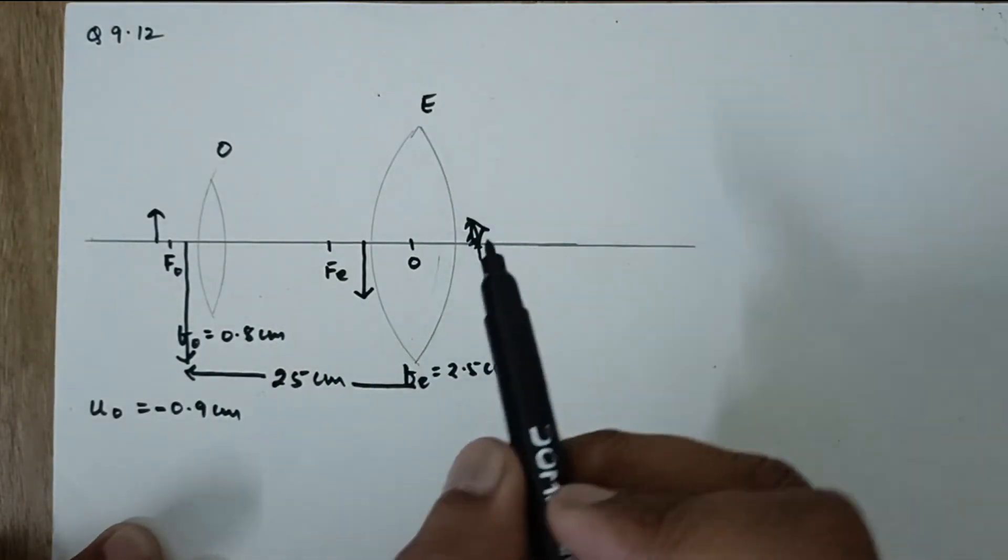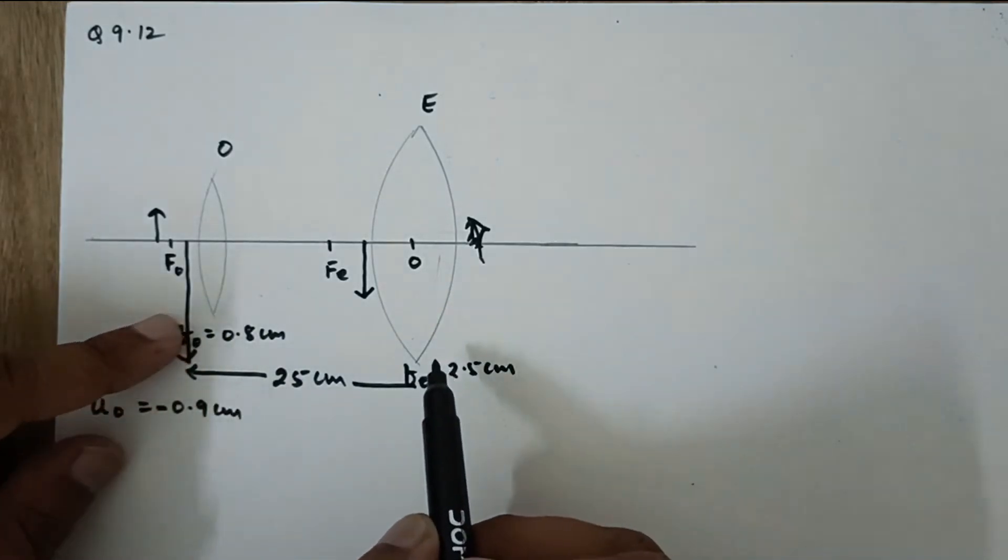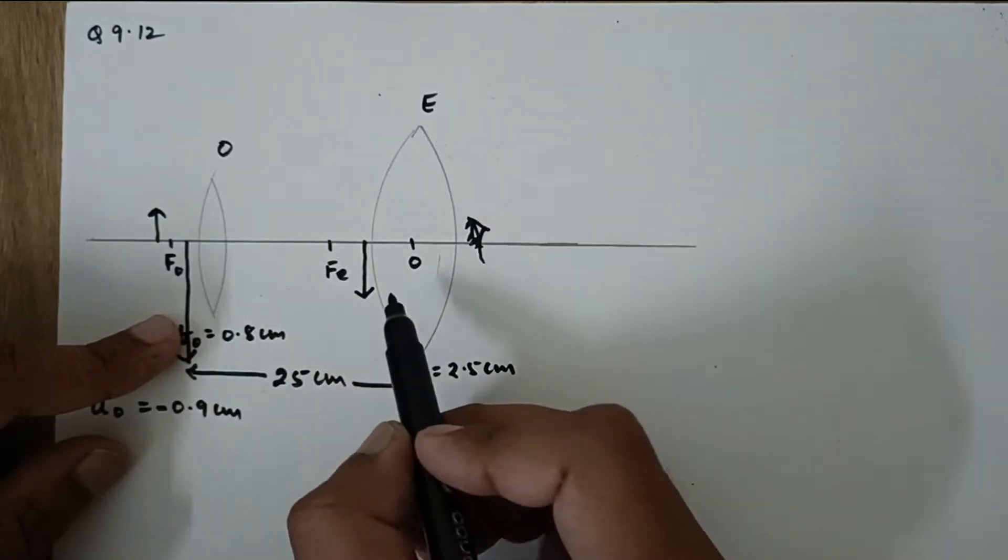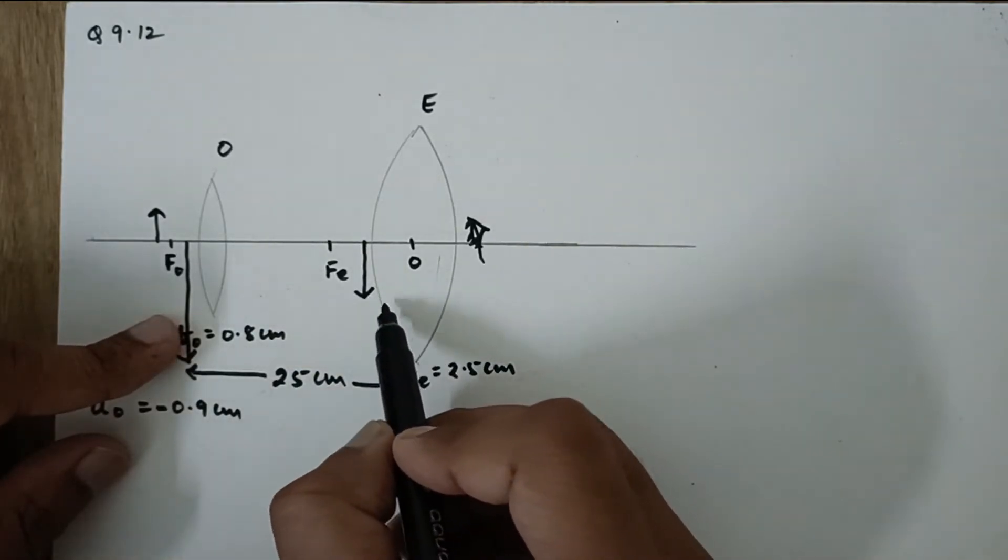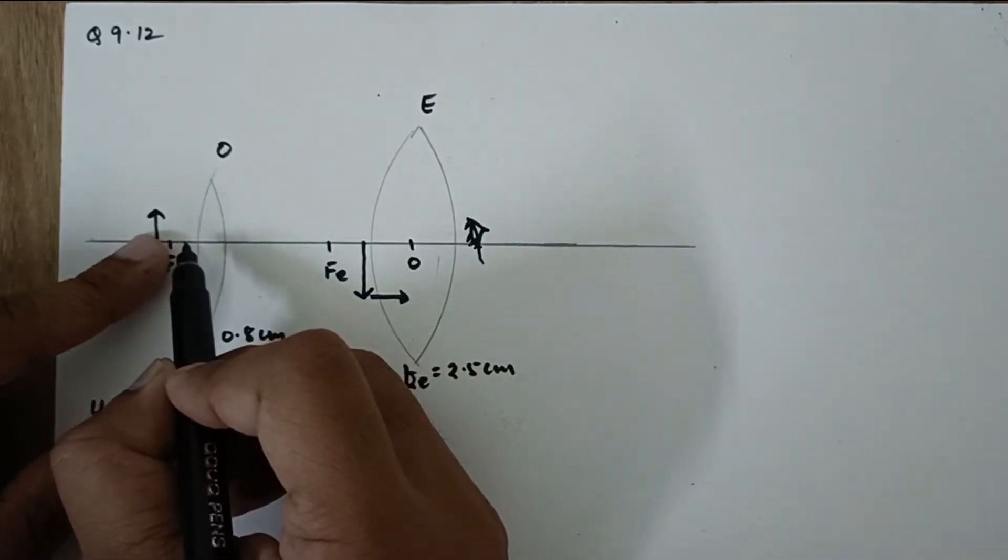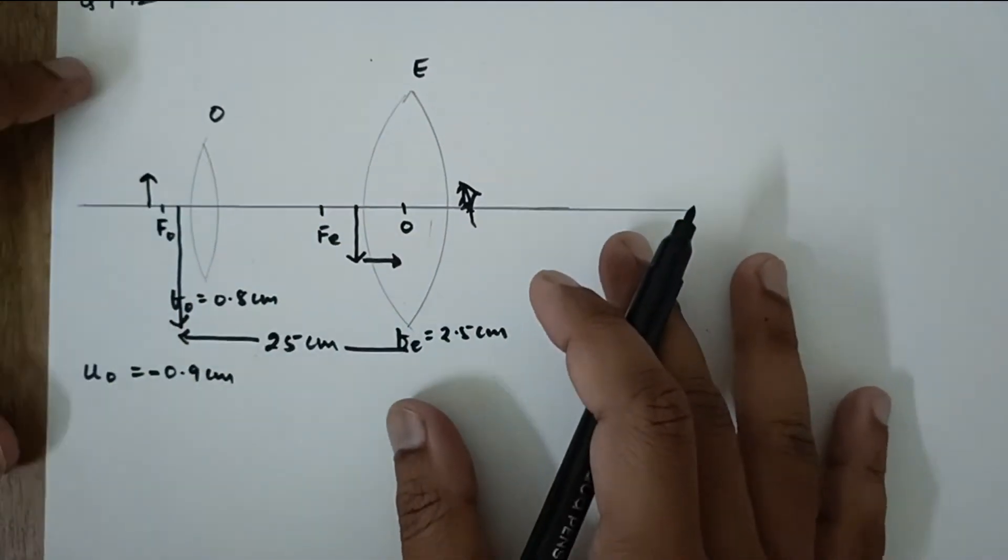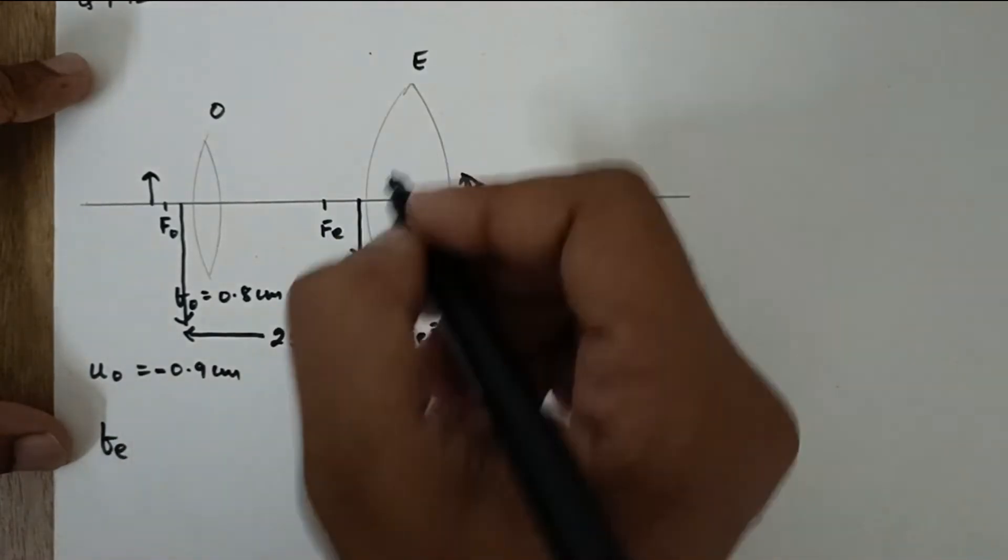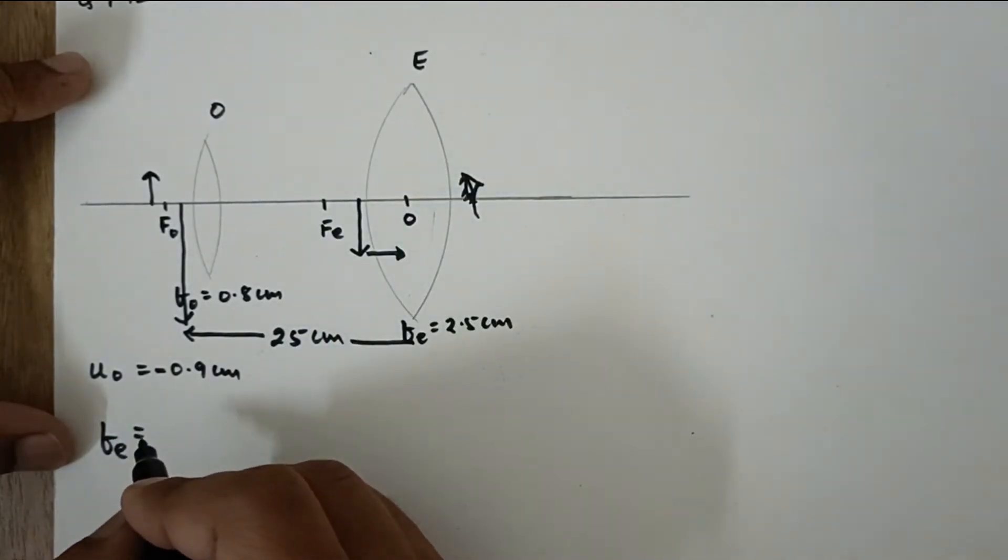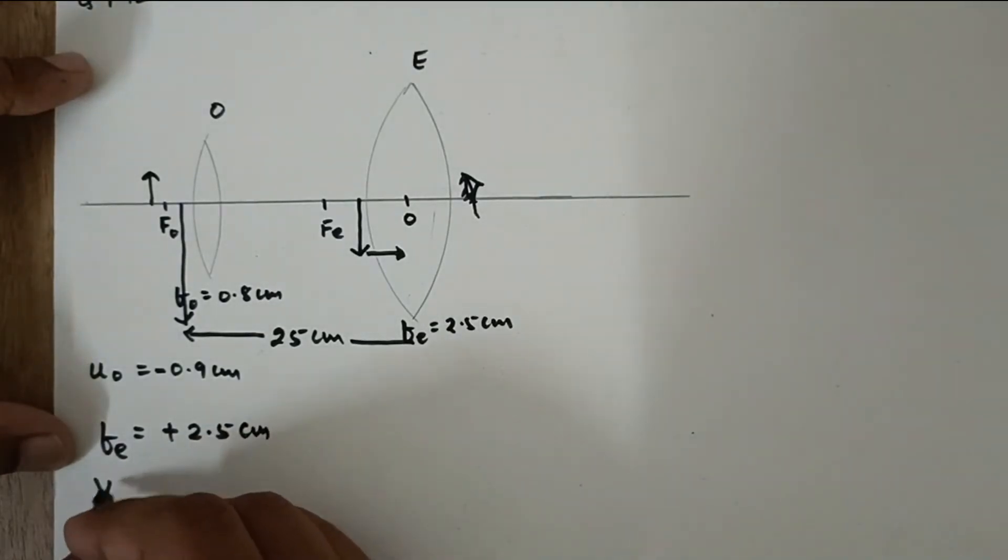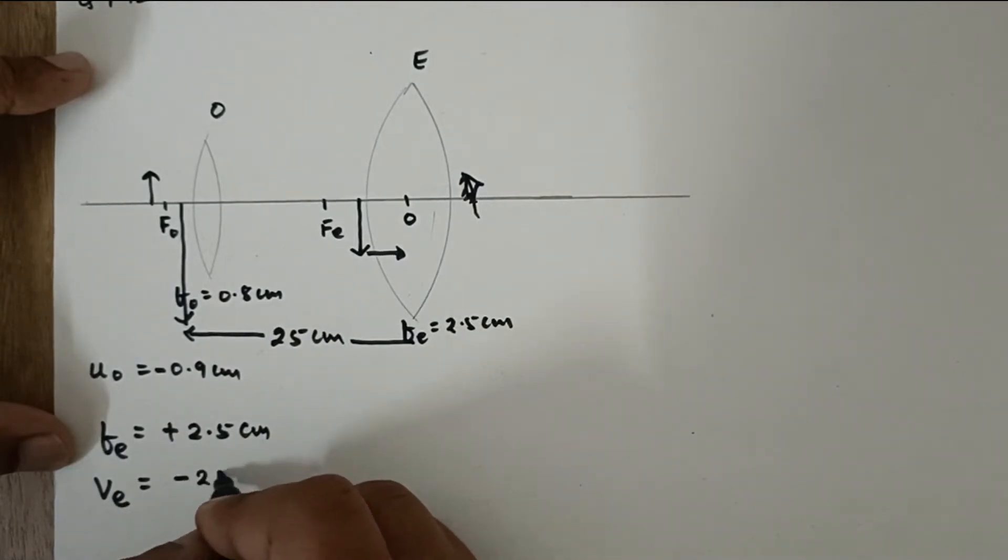For this lens now I know this is the image which is formed at a distance of 25 cm. Now the image distance would be negative as this would be the direction of incident ray and we would be measuring the distance away from the optical center in this way. So let me say for this lens FE since it is converging it has to be positive focal length plus 2.5 cm. Then I have VE that is minus 25 cm.